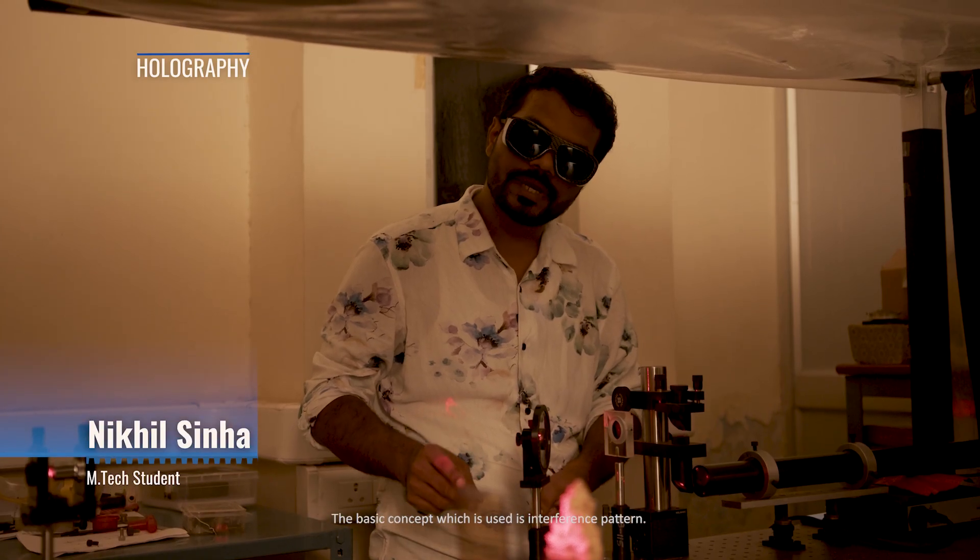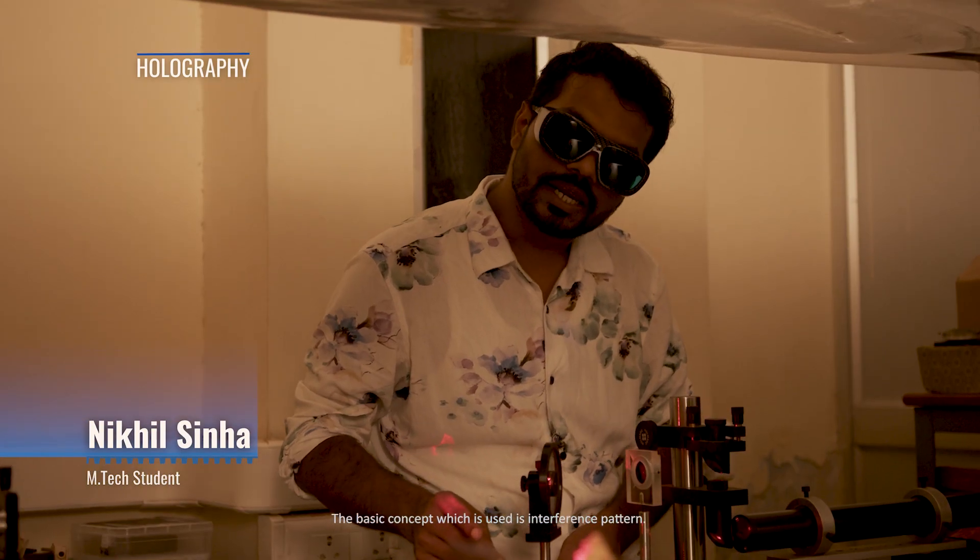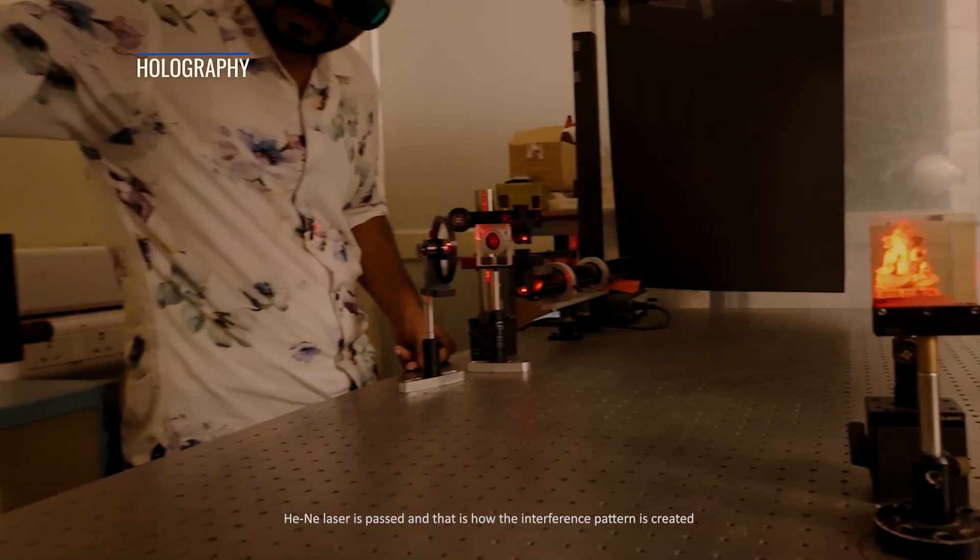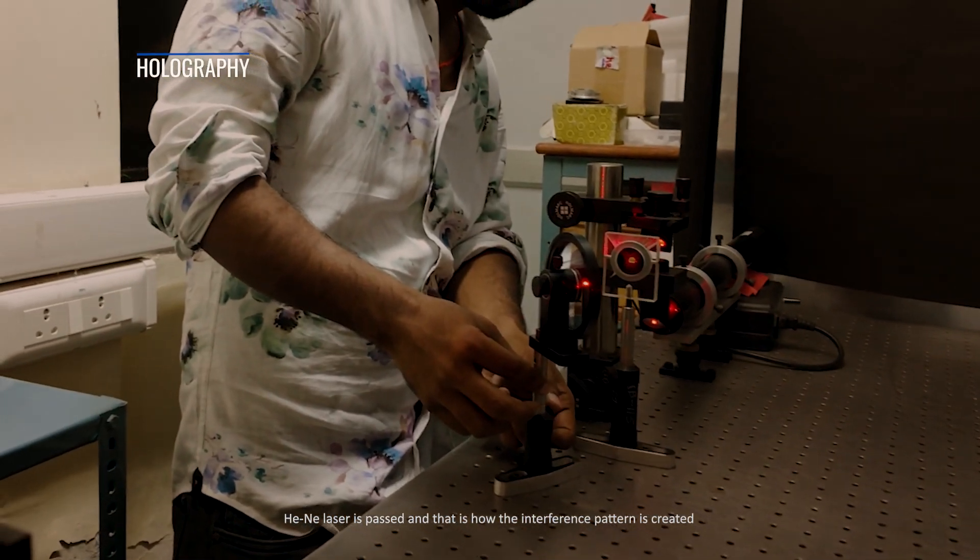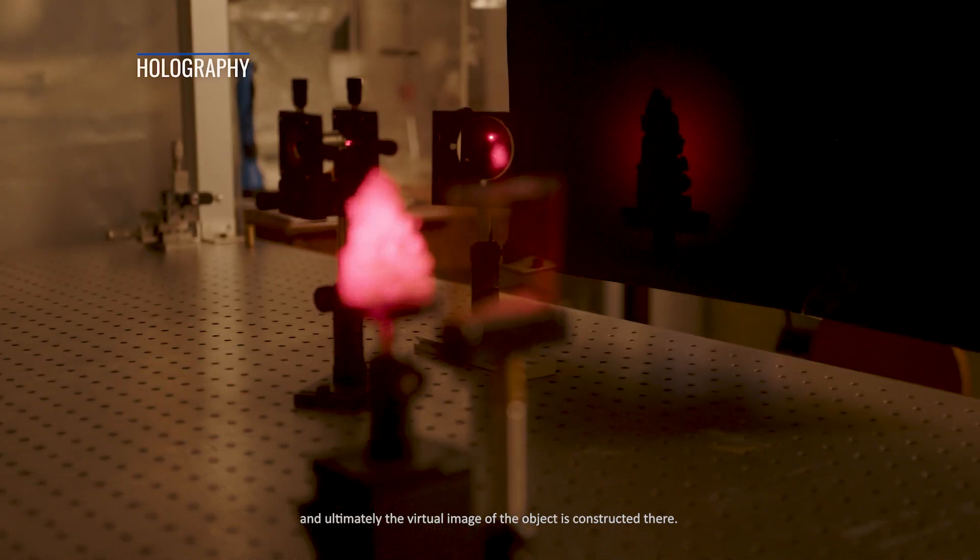The main objective of this experiment is to create a virtual image through hologram. The basic concept used is the interference pattern. The laser is passed and that's how the interference pattern is created and ultimately the virtual image of the object is constructed.